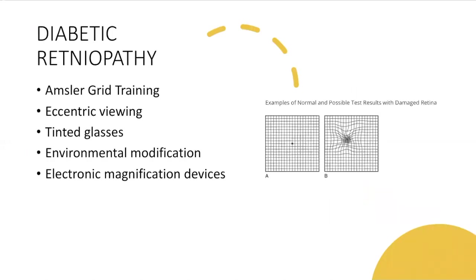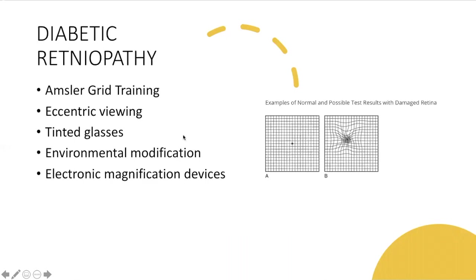For diabetic retinopathy, we use Amsler grid training. This is an example showing what happens to vision — it looks normal to most people, but for someone who has macular degeneration, this is how their vision appears. They also do eccentric viewing, wear tinted glasses, use environmental modification, and electrical magnification devices, which are really important for someone with diabetic retinopathy who has a hard time seeing what's in front of them.